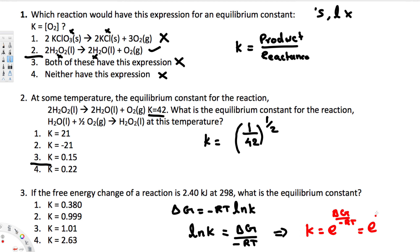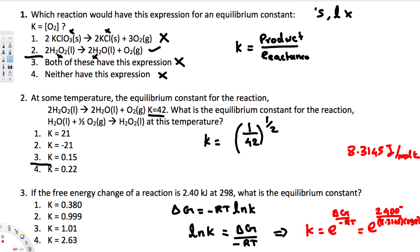Plugging in the values: ΔG = 2.40 kJ, which we convert to 2400 J. R = 8.3145 J/mol·K, and T = 298 K. Note the negative sign in the denominator. So K = e^(2400 / (−8.3145 × 298)). Calculating this gives the final answer.